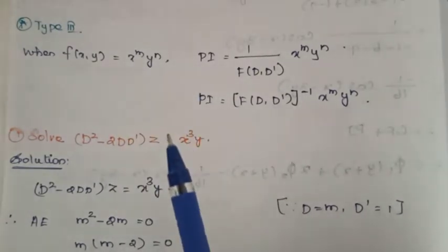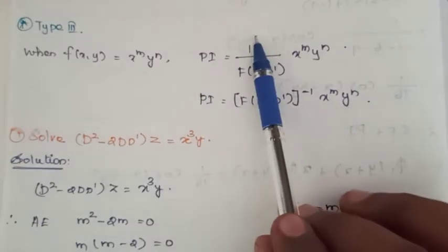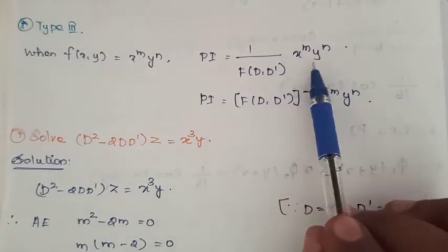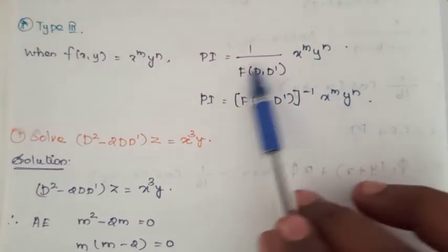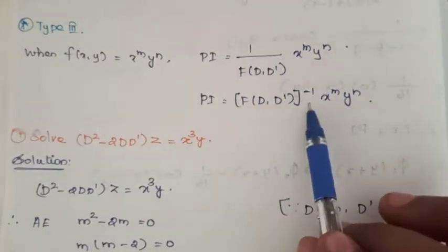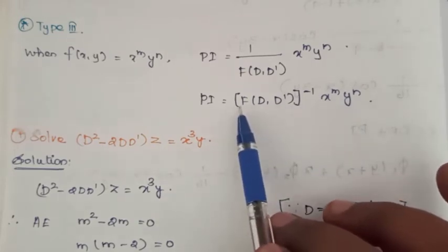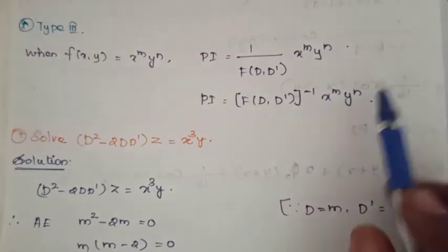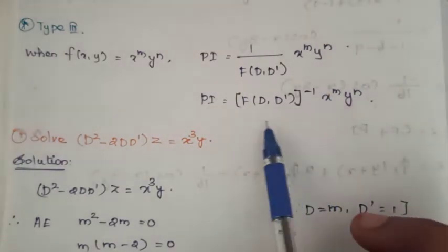This is the particular integral. PI is equal to 1 divided by f(D, D') into x power m, y power n. The denominator numerator — that means inverse term — means easier to solve. So f(D, D') whole inverse into x power m, y power n. This is the method.